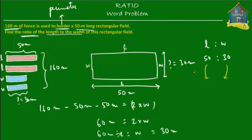The ratio of the length to the width is simply 50 to 30, but we can simplify this. Both 50 and 30 are divisible by 10 — the last digit of each is 0 — so if we divide both terms by 10, we get 5 and 3. The ratio of length to width is 5 to 3, and that's your answer.